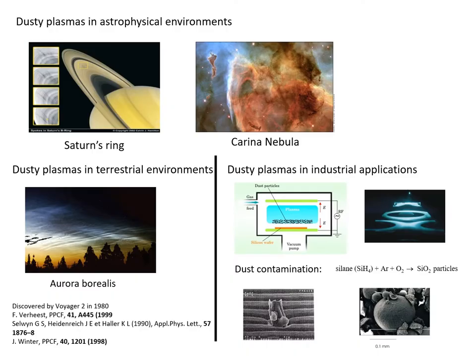Examples of dusty plasma in astrophysical environment are Saturn Ring and Carina Nebula. Examples of dusty plasma in terrestrial environment, we cite Aurora Borealis. Dusty plasma are also present in industrial applications. For example, in semiconductor factories, dust presents a source of contamination of wafers. This figure illustrates dust in the Tokamak reactor.